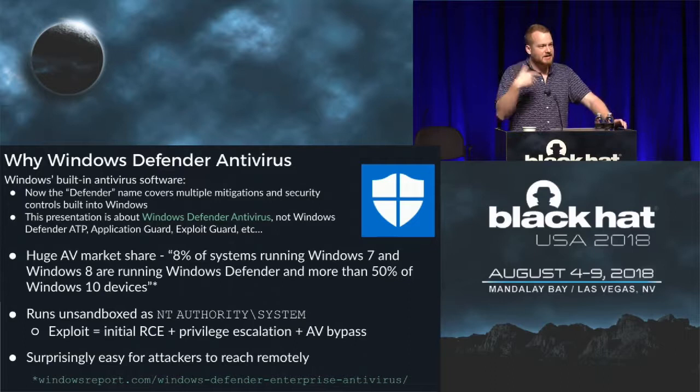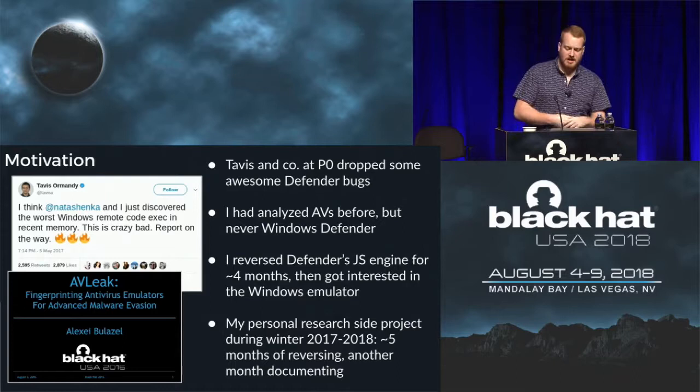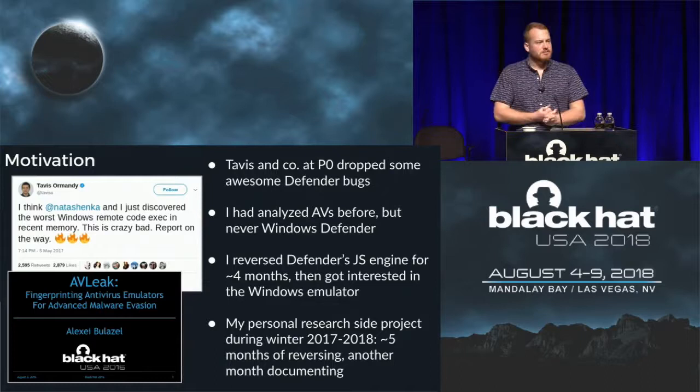Some friends at Google Project Zero told me they were able to get Defender to scan binaries by simply emailing them to people who had a Gmail tab open in the background. Google Chrome would cache the downloaded file from the Gmail message, it would hit disk, a minifilter driver would grab it and go scan it — so it's really easy to get into this attack surface. My motivation was a tweet about a year ago where Tavis Ormandy and Natalie Silvanovich at Google Project Zero discovered some great Defender bugs. I spent about four months reverse engineering Windows Defender's JavaScript engine and then about five or six months on the Windows emulator, which is what you're seeing here today.